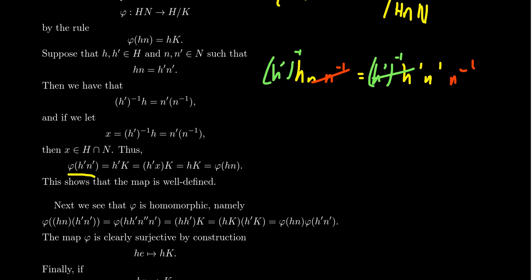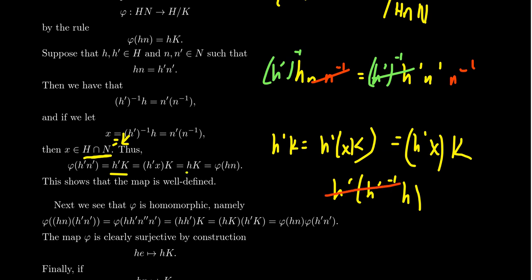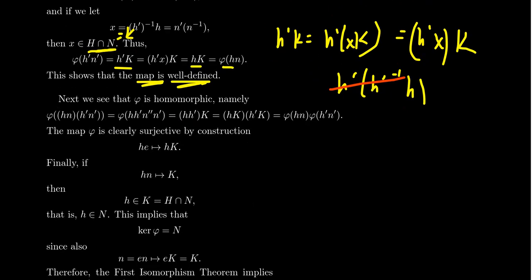With that in mind, the image of h'n' under φ is h'K. Since x belongs to K, we can write h'K = h'xK. Now x = h'⁻¹h, so h'x = h'·h'⁻¹h = h, giving us hK — which is exactly φ(hn). So the map is well-defined: it doesn't matter which factorization of the element you use.